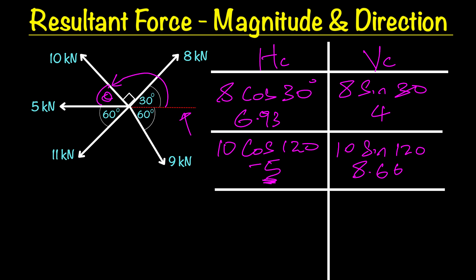For the negative 5 kilonewtons going to the left, you can input this directly as negative 5 because it's just a force going to the left. However, if you want to keep to our system, you can write it as 5 cos 180 and you still get the same negative 5. It has no vertical force component, so that's zero for the vertical.